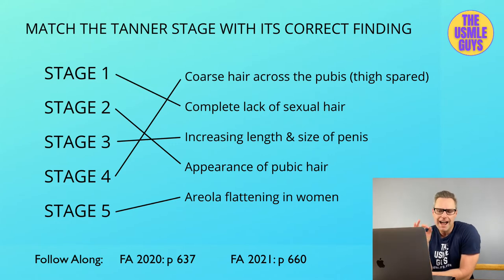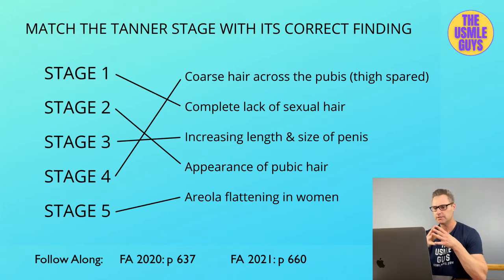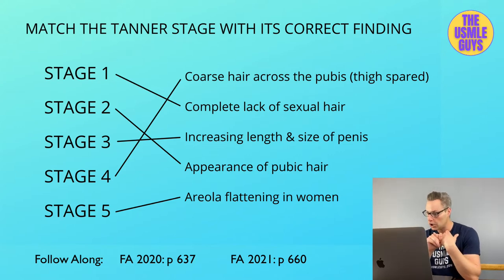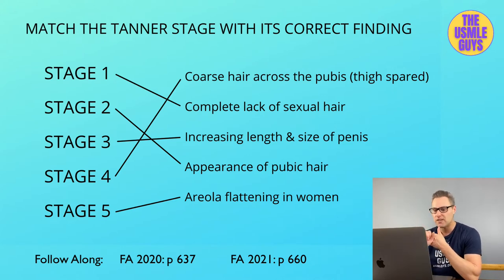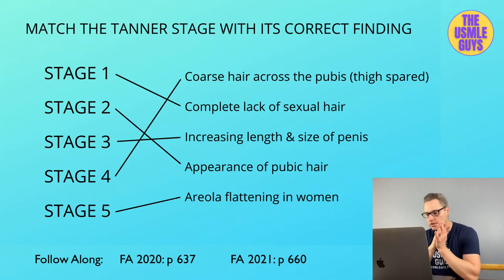Tanner stage three, which happens around 11.5 to 13 years of age, is characterized by coarsening of pubic hair in both males and females. In males, you'll see an increase in penis size and length; in females, the breasts continue to enlarge. Tanner stage four happens around 13 to 15 years of age and is characterized by continued coarsening of pubic hair, but the thighs are not yet affected. In females, the areolas are still raised and breast mounds continue to develop.